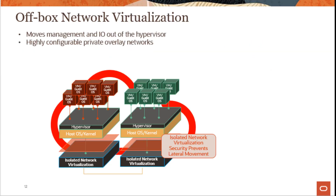Here is a pictorial representation of off-box network virtualization, showing multiple layers: VMs running on top of the hypervisor, then the host or OS kernel, and then isolated network virtualization — which is highly hardened — using the off-box network virtualization method.